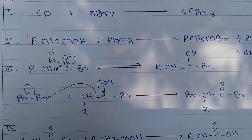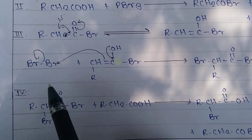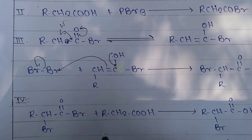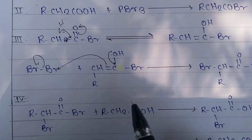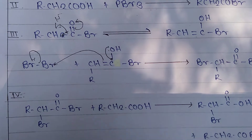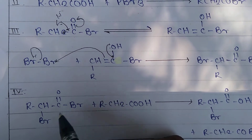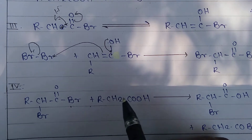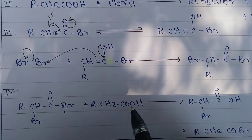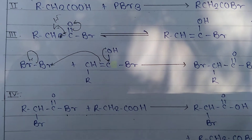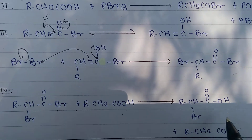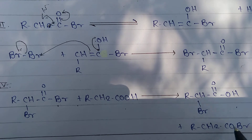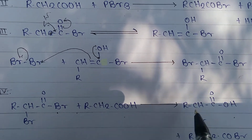Finally, an interchange reaction between the alpha-bromo acid bromide and the acid molecule gives the alpha-bromo acid and regenerates the acid bromide, which continues the reaction. The alpha-bromo acid bromide reacts with the acid molecule to give the alpha-bromo acid, and the acid bromide is regenerated.